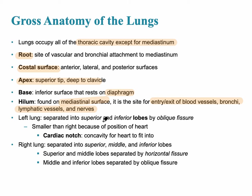The left lung is separated into the superior and inferior lobes by the oblique fissure. This is different from the right side because of the heart — on the left side, the cardiac notch is the concave surface where the heart fits into. The right lung has three lobes: the superior, middle, and inferior. The phrenic nerve is the major nerve that supplies the diaphragm, coming out of the cervical plexus at C3 to C5.